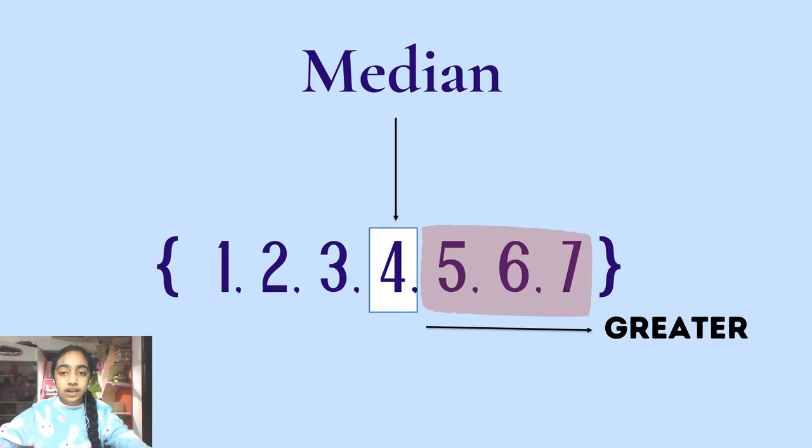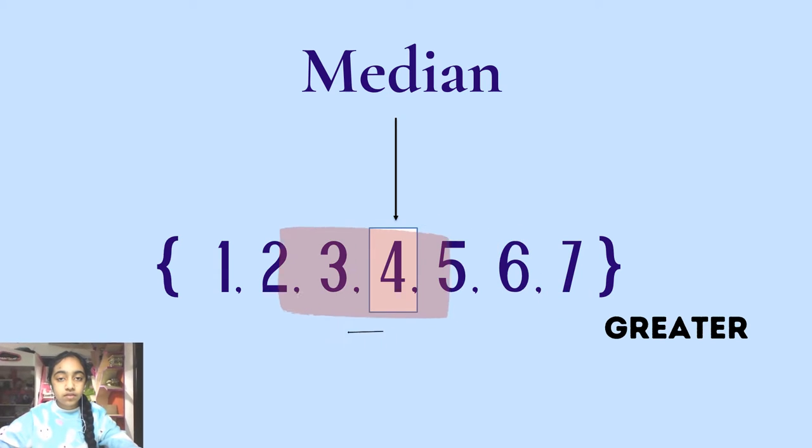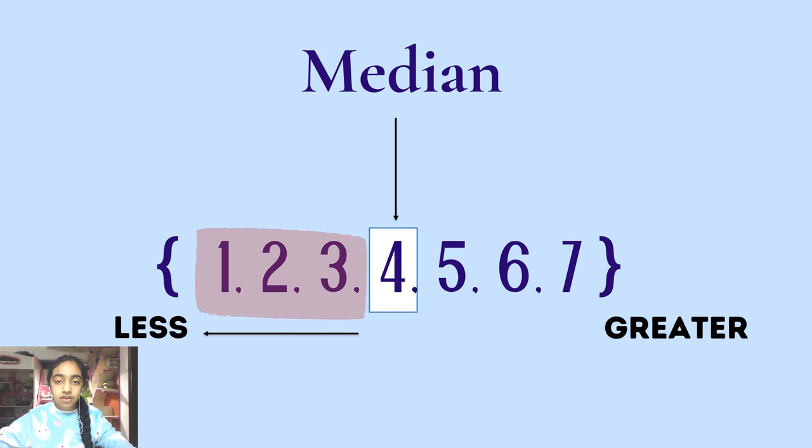One half which is on the right contains numbers that are greater than or equal to the median. And the other half contains numbers that are less than or equal to the median. Just like this.